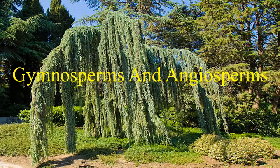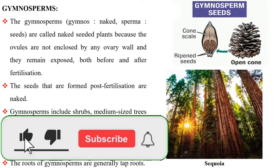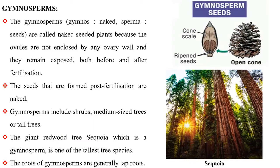Gymnosperms are called naked seeded plants because the ovules are not enclosed by any ovary wall and they remain exposed both before and after fertilization. The seeds that are formed post fertilization are naked. Gymnosperms include shrubs, medium sized trees or tall trees. The giant redwood tree, sequoia, which is a gymnosperm, is one of the tallest tree species.